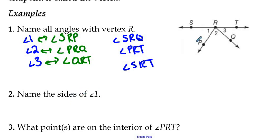The second question says, name the sides of angle 1. Well, angle 1 is right here. The sides are rays RS and RP. And what points are on the interior of angle PRT? Interior, think inside the angle. Angle PRT is this angle right here. The only point that lies on the inside here that we know of is point Q. So that's the basics of angles. Naming them, naming the sides, finding the points, and so forth.